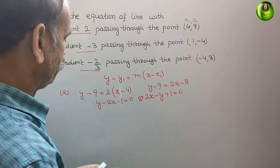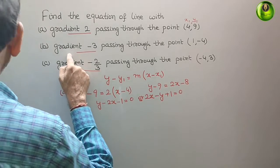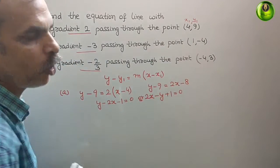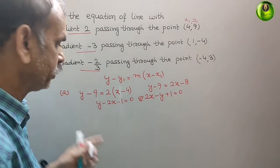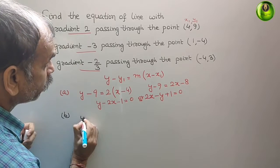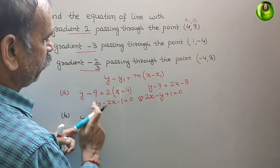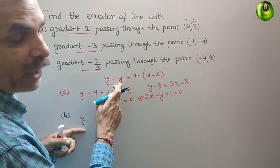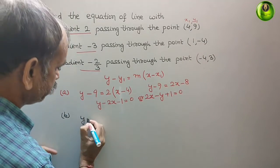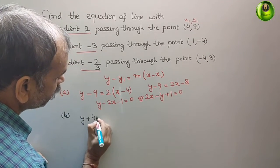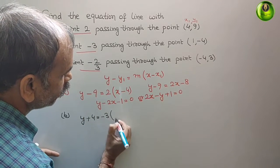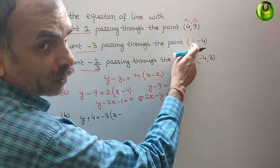Second one. Second is gradient is minus 3 passing through the point 1, comma minus 4. Same we have to read. So, (b). So, y minus y1 minus of minus 4 is plus 4. That is equal to minus 3 into x minus 1.